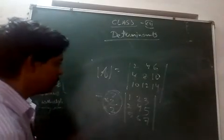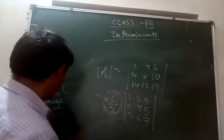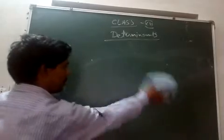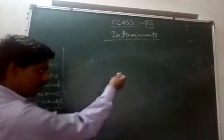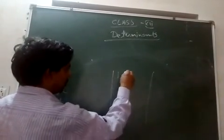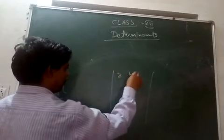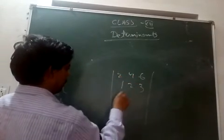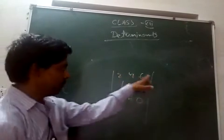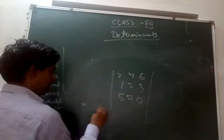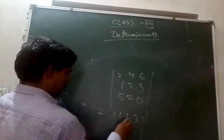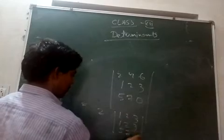If two rows are same, the determinant is zero. If two rows are proportional, the value is also zero because of this property. For example: 2 4 6 / 1 2 3 / 5 7 0. If you take 2 common from the first row, you get 1 2 3 / 1 2 3 / 5 7 0 — now these two rows are the same, so the value of the determinant is zero.